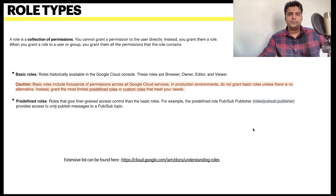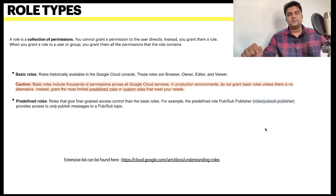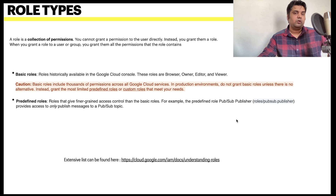The second type is predefined roles, which give fine-grained access control. For example, if you just want to give Pub/Sub publisher access to a user, you assign roles/pubsub.publisher so they can only publish messages to that queue and nothing else. These roles are already created by Google, so you don't have to create them — saving time. If a role already exists, we should use it rather than creating a new one.